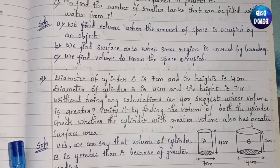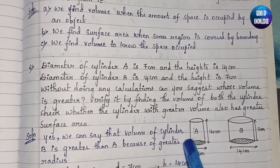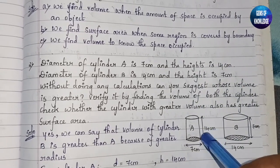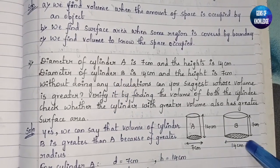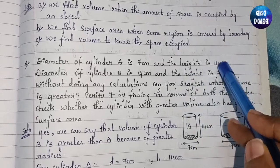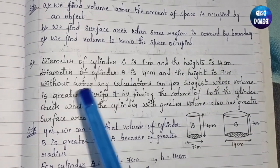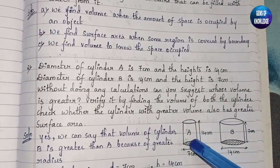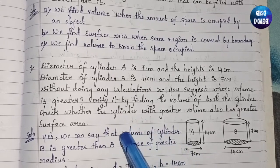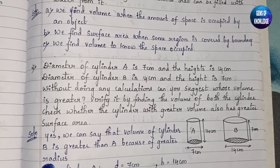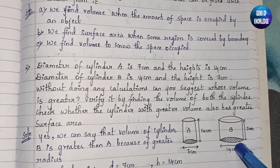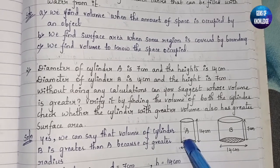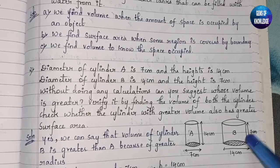Second question: two cylinders are given. Cylinder A has diameter 7 cm and height 14 cm. Cylinder B has diameter 14 cm (double of A) and height 7 cm (half of A). Without calculation, we can say Cylinder B has greater volume because it has greater diameter, hence greater radius. Greater radius leads to greater volume.